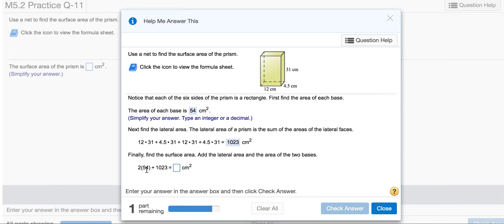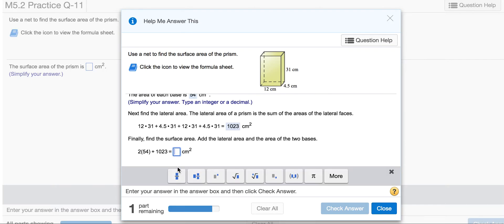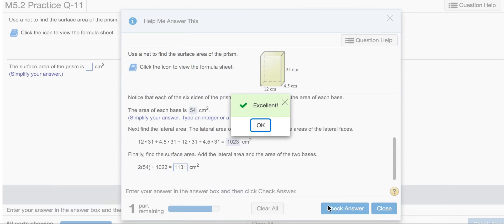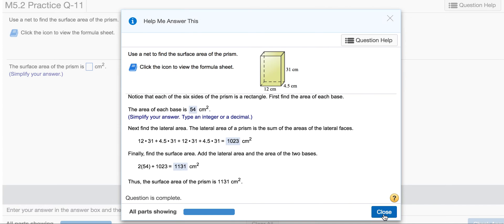The mistake I made the first time is I just worked across on my calculator. Remember, you need to do order of operations, which means multiply first. Do all your multiplications, then add your products to get 1,023.